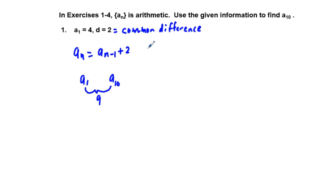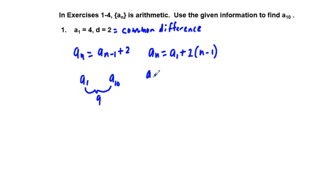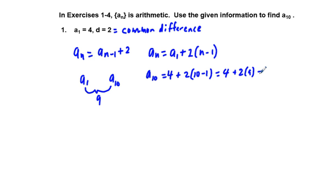Our explicit rule is a sub n equals a sub 1 plus d times the quantity n minus 1. In this case we're looking for a sub 10, so that's going to be our first term 4 plus 2 times the quantity 10 minus 1, which equals 4 plus 2 times 9, which equals 4 plus 18.